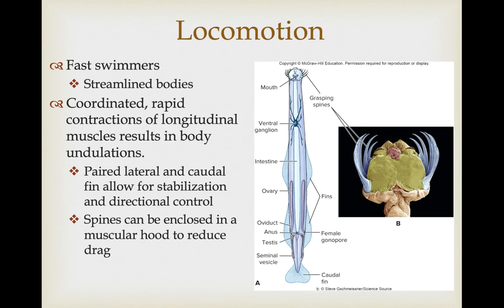They're very good swimmers with streamlined bodies. Coordinated contractions of the longitudinal muscles result in body undulations for locomotion. The paired lateral and caudal fins act more for stabilization and directional control than for thrust. The spines used during feeding can be enclosed in a muscular hood when swimming for greater hydrodynamics.